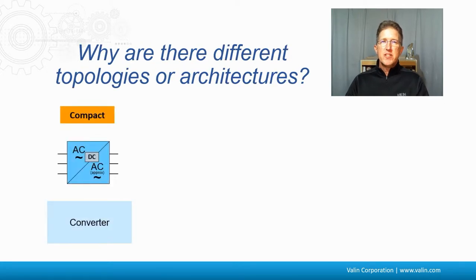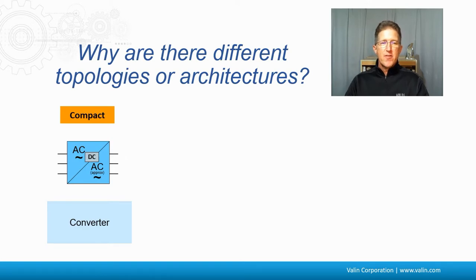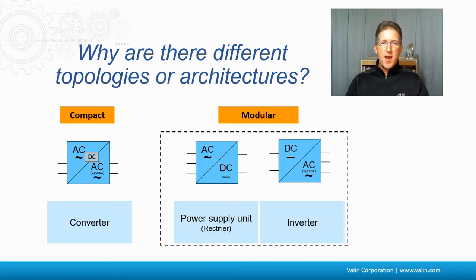Why are there different topologies or architectures? Here are a couple to consider. There's what some suppliers call 'compact,' where the AC is converted to DC, which is then converted back to an approximated AC that goes out to the motor — that's the converter. You can break that up so that the AC-to-DC conversion is a power supply unit, rectified internally and separated into two units. The DC then becomes the AC that goes out to the motor, and that's called an inverter.